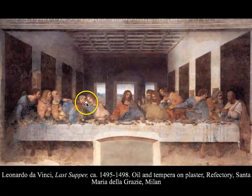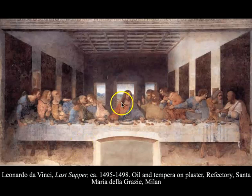We also have a sense of linear perspective with Leonardo da Vinci — Christ's head is the focal point again, from which all the orthogonals are drawn. You can even see that Leonardo is using the windows to light the background of Christ, giving him a sense of a halo as well.